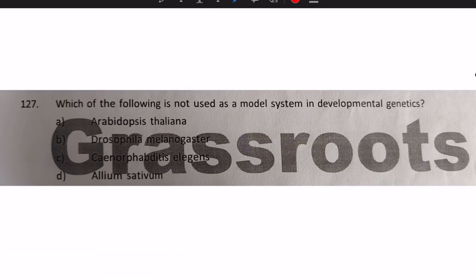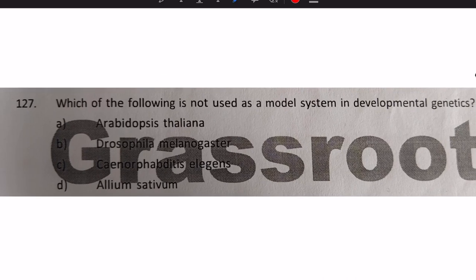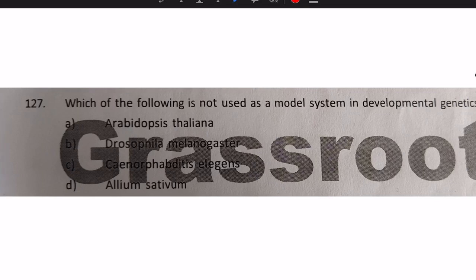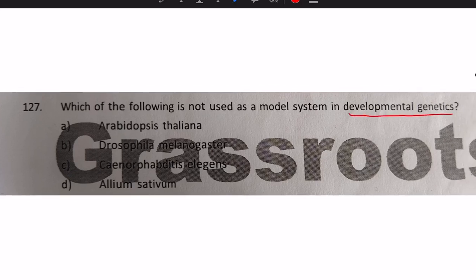Next question: which of the following is not used as a model system in developmental genetics? Arabidopsis thaliana is a famous model system for plant developmental genetics. Drosophila and C. elegans (Caenorhabditis elegans) are major developmental genetics model organisms. However, Allium sativum is not used as a model system in developmental genetics. Answer: Allium sativum.